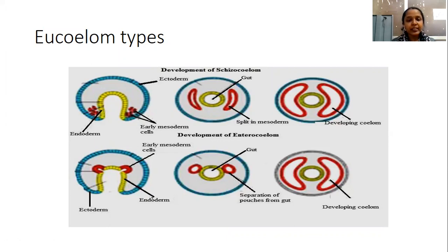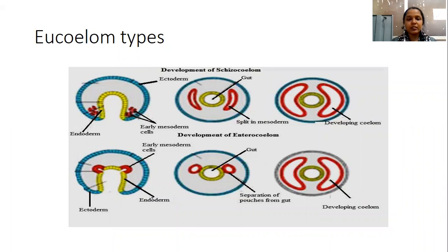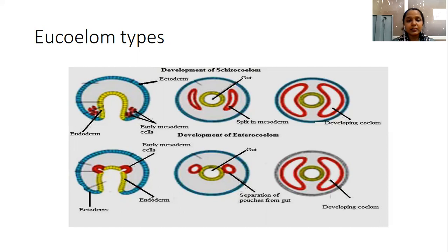Based on the development of eucoelomates, we can categorize them into two types: schizocoelom and enterocoelom. In case of the schizocoelom, the coelomic cells arise by splitting the mesodermal bands in the early embryonic stages. When the coelomic cells are derived from the mesodermal bands and later proliferate to produce the coelom cavity, these are considered schizocoeloms. Examples are molluscans, annelids, arthropods, and onychophorans.